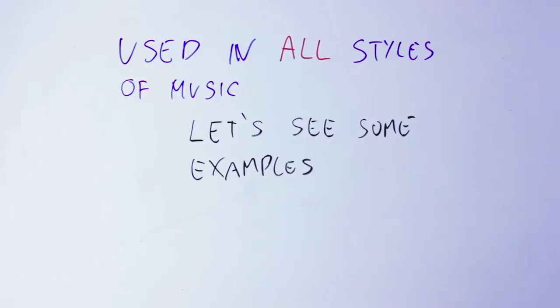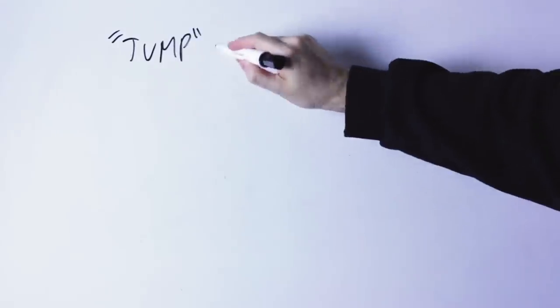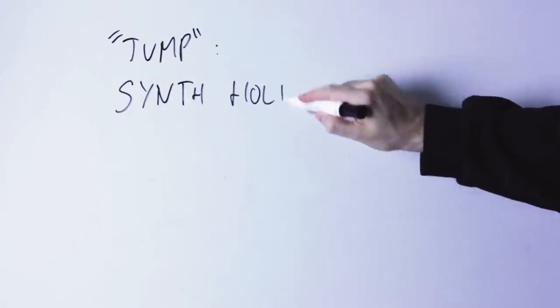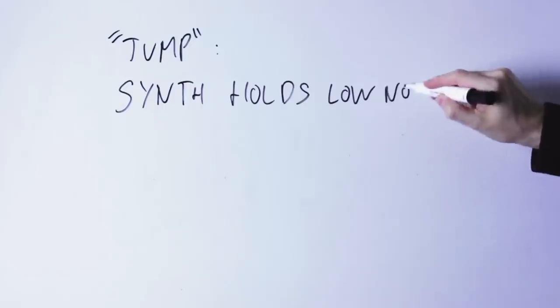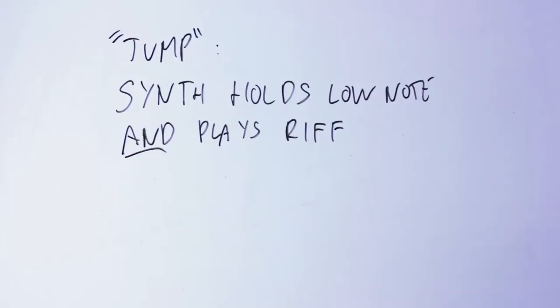Probably the most famous example of a pedal point in rock and roll music is 'Jump' by Van Halen. You can hear how the synth is playing both the main riff and holds a low note, which is our pedal point. Let's see a completely different example from a completely different style.